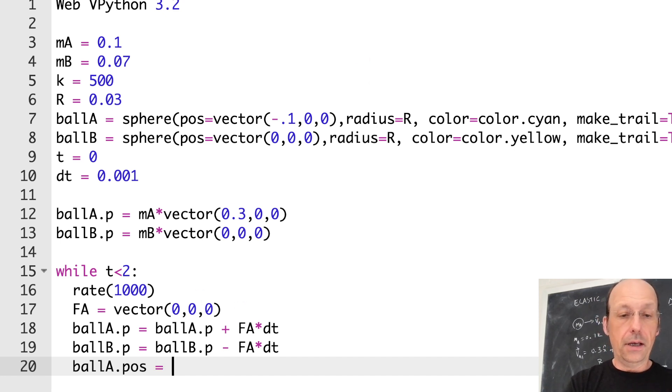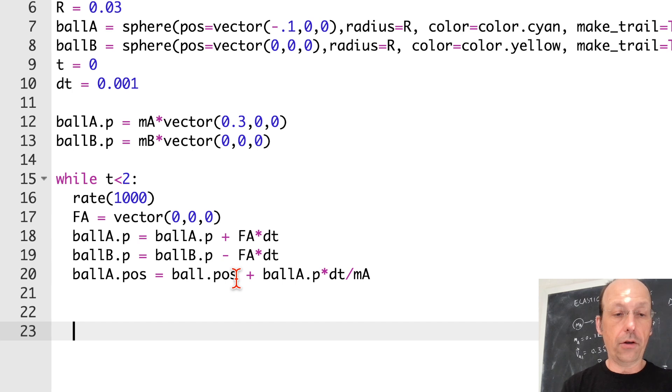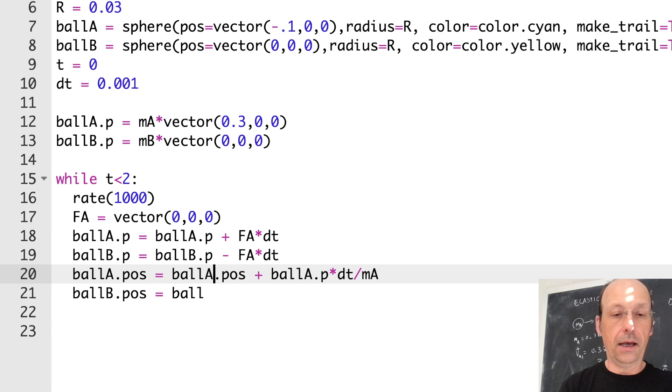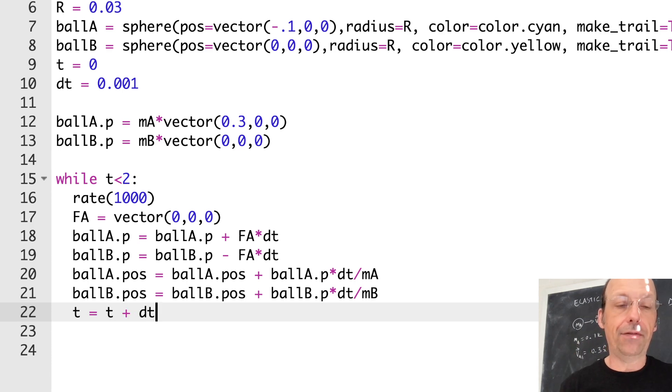Now let's update the momentum of ball B, which I know it seems silly because that's a 0, but it will make more sense later. Ball B dot P equals ball B dot P minus F A times DT. So whatever the force on A is, the force on B is equal and opposite. So I have that negative sign there. Now I'm going to update the positions of both balls. Ball A dot POS equals ball A dot POS plus ball A dot P times DT divided by MA. And then I need to do the same thing for the other mass. Ball B dot POS equals ball B dot POS plus ball B dot P times DT divided by MB. Now I just need to update time. T equals T plus DT. Let's just see if this runs.